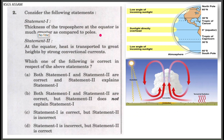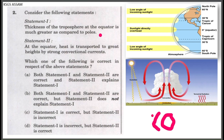The thickness of the troposphere at the equator is much greater as compared to the poles. The troposphere thickness at the equator region is much greater as compared to the poles.